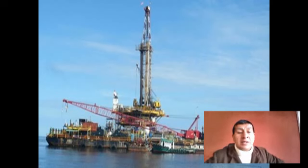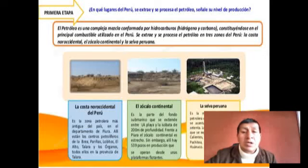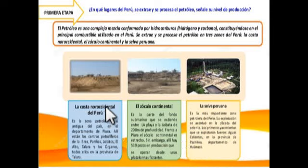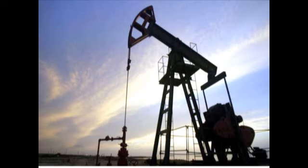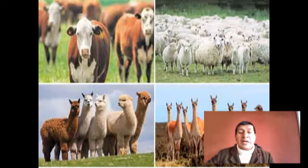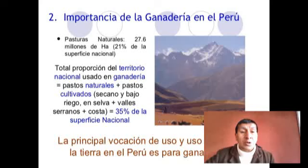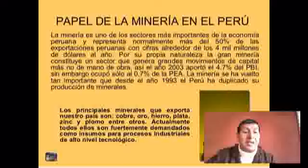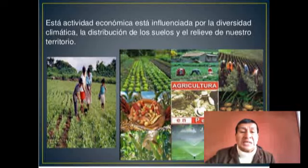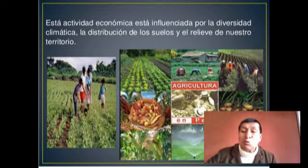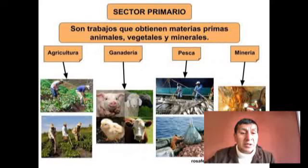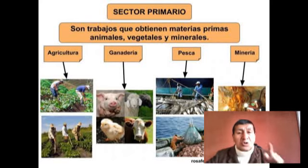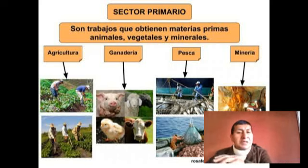Otra actividad importante es el petróleo. Nuestro país tiene pozos petroleros ubicados en tres lugares: en la costa noroccidental del Perú, el Zócalo Continental y en la selva peruana. Dentro de las principales actividades económicas —pesca, minería, actividades de nuestra tierra— tenemos que separar lo que son sectores primarios, secundarios y terciarios. Los sectores primarios son trabajos que obtienen materias primas: animales, vegetales y minerales. Por ejemplo, la agricultura, la ganadería, la pesca y la minería son actividades primarias.